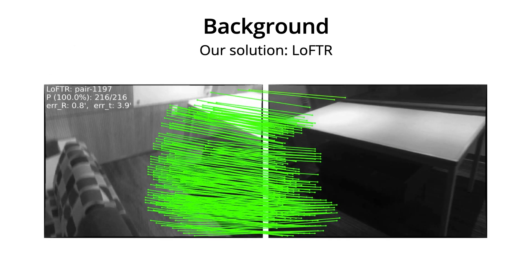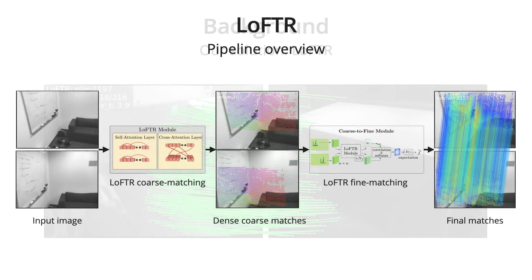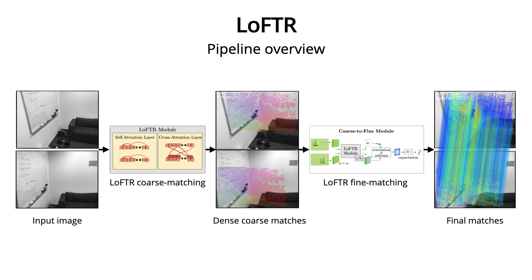We propose our solution, LOFTR, to tackle these two challenges. LOFTR uses a detector-free pipeline to avoid the repeatability bottleneck of feature detectors, and uses transformers to extract position-dependent feature representations. Without the feature detector, LOFTR extracts dense matches at a coarse level first and refines the good matches to subpixel level later on. This means that each area in the image pair can be potentially matched, and thus the repeatability bottleneck is avoided. The fine level matching further refines the location of the coarse matches to ensure accurate pose estimation.